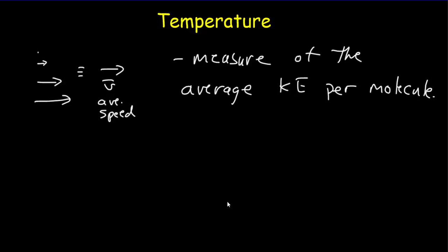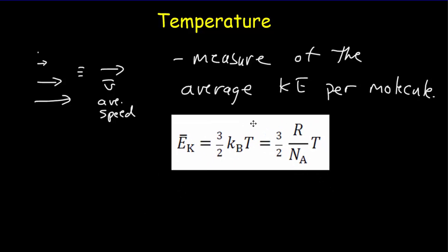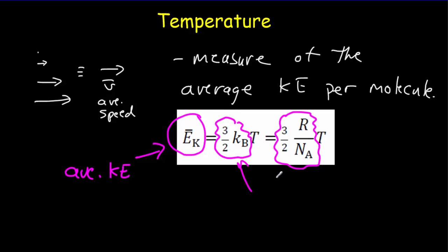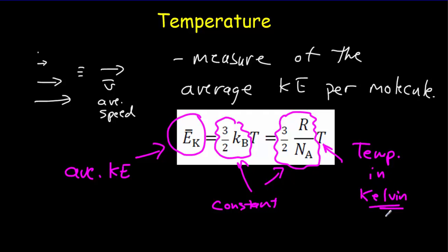A little later in the course, we'll study ideal gases and get this equation from our data booklet: the average kinetic energy of a molecule equals some constant times the temperature — where temperature must be measured in Kelvin. What you want to keep in mind is that higher temperatures mean higher kinetic energies per molecule. Also keep in mind that the potential energy of the molecules does not affect the temperature — it's only the kinetic energy that affects temperature.